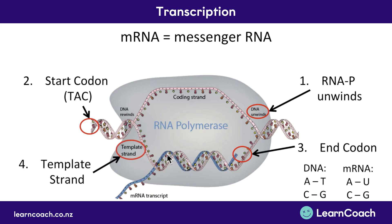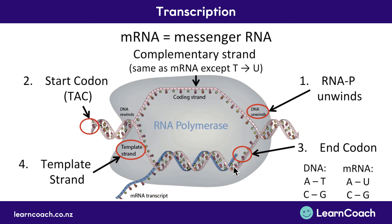We need to know some names here. The strand being read is called the template strand, because it acts as a template for the mRNA to copy. The other strand at the top is called the complementary strand. If there's a C at the bottom, mRNA copies it with a complementary G — which is exactly the same as what the top complementary strand of DNA already has. So mRNA will be exactly the same as the complementary strand, except T is exchanged for U.